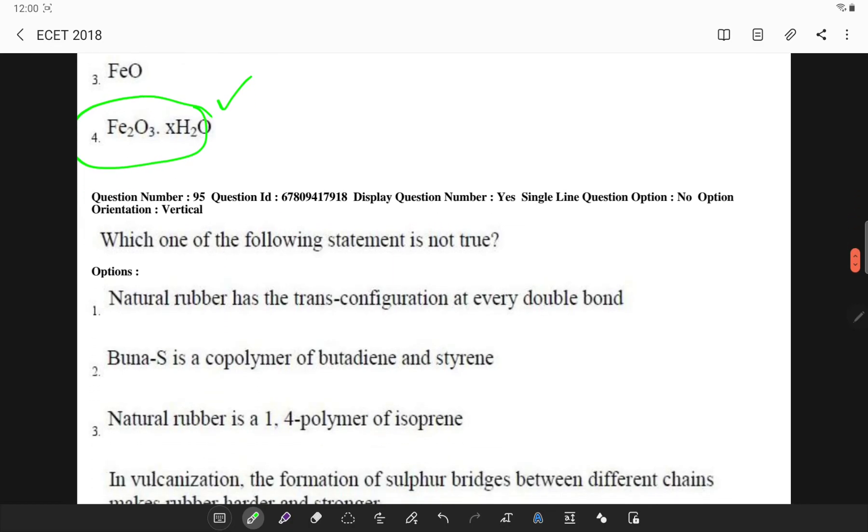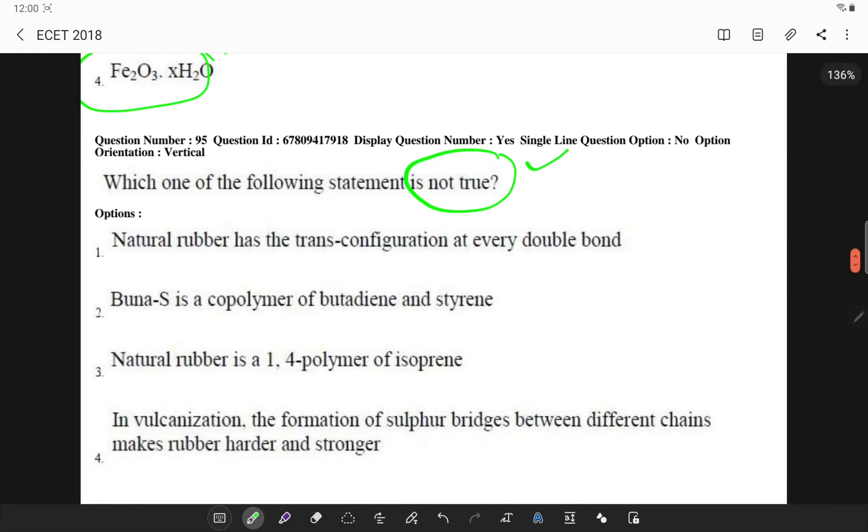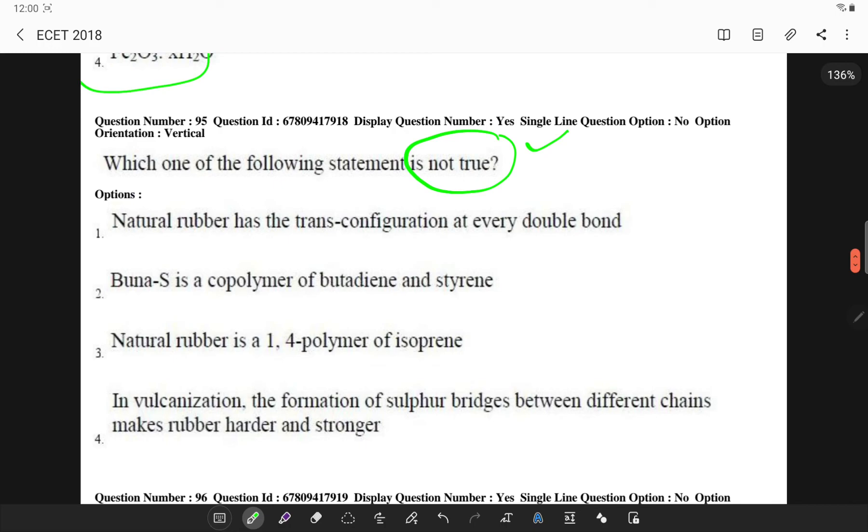Which of the following statements is not true? Natural rubber is in trans configuration at every double bond. So this we discussed in earlier topic. Natural rubber, I told you about isoprene. Vulcanization also we discussed about isoprene. So this is a wrong answer.